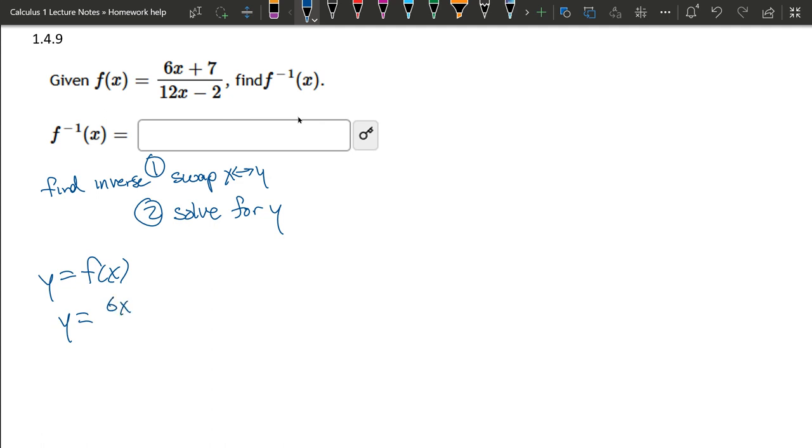And here our f(x) is 6x plus 7 divided by 12x minus 2. Alright, we haven't swapped anything yet. We're about to swap. This is step one.